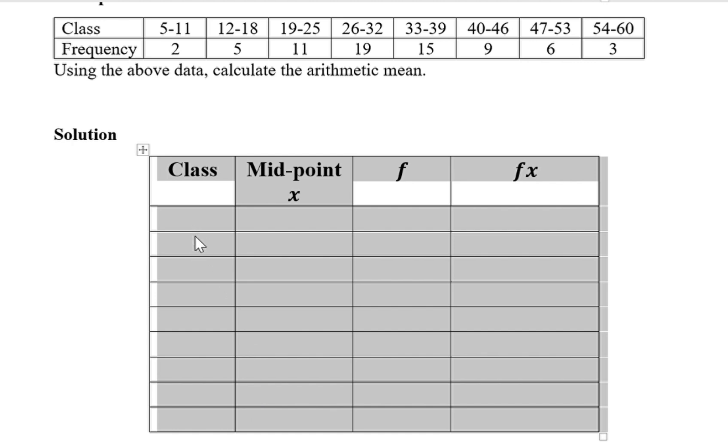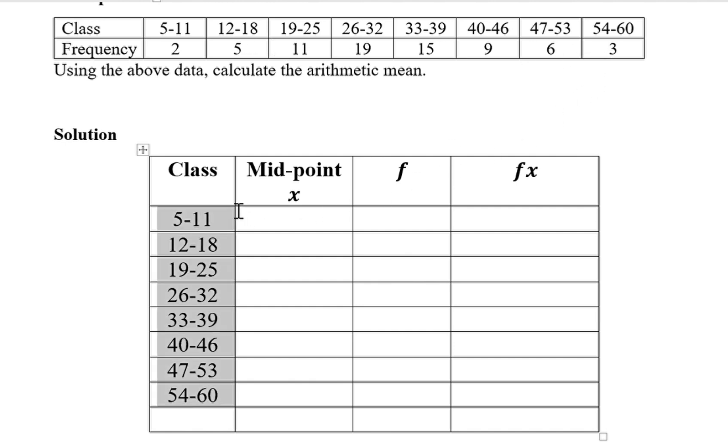The first column is the class column which consists of the respective classes we have been given here: 5 to 11, 12 to 18, all the way up to 54 to 60 written in column form.